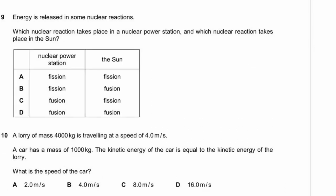Question 9. Which nuclear reaction takes place in a nuclear fuel station and which in the sun? In a nuclear fuel station we expect fission — large nuclei broken into smaller pieces with energy released. In the sun, small nuclei are fused together — that's fusion. So nuclear power station: fission; sun: fusion. Answer B.